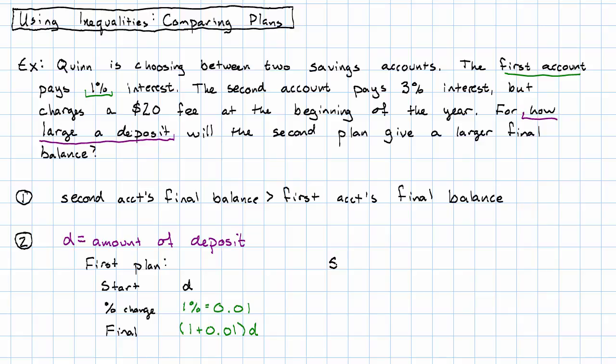For the second plan, now at the start of the year, before the money starts earning interest, the bank charges a $20 fee. So at the start of the year, we have D minus $20. But now the percent change, the second account pays 3% interest. So the percent change is 3%, which is 0.03. And therefore, the final amount in the second account is 1 plus 0.03 times the starting amount, which is D minus 20.